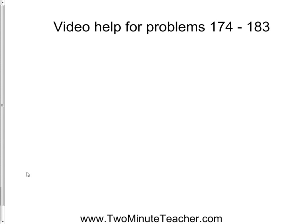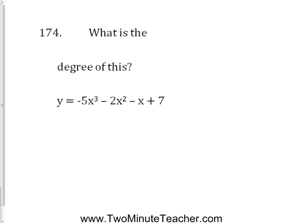Some help on problems 174 through 183. On 174, what's the degree of this? It's got a negative 5x to the third, a negative 2x squared, a negative x, and a positive 7. Well, this is a polynomial. You can't say it's a binomial because it doesn't have just two terms, or a trinomial because it doesn't have just three. Once it gets over tri, you usually just go with polynomial. So it's got four terms.